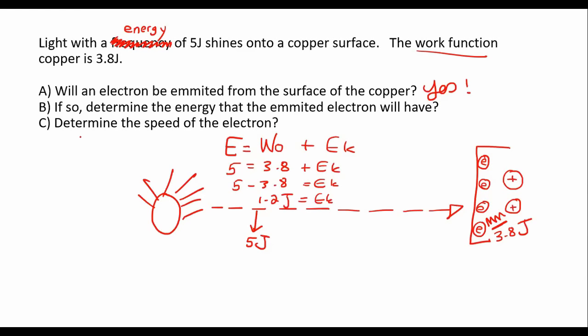The last question for tonight: determine the speed of the electron. We know that Ek equals one half mv squared. The m is the electron's mass, which is 9.11 times 10 to the minus 31.